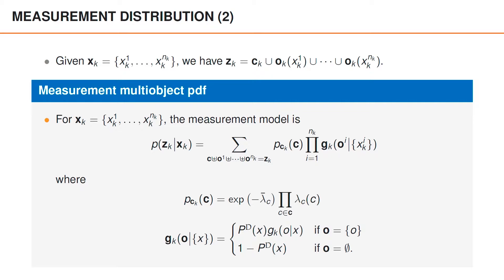Inside this expression, pck denotes the clutter distribution, which is a Poisson point process PDF, and gk denotes the distribution of the measurements from a single object, which is a multi-Bernoulli PDF. To make sense of this summation, think of every term as an association hypothesis: in every term we say I think these measurements are clutter, these measurements are the object measurements from object 1, and so on, until every measurement in zk is assigned to one of the sets. We then sum over all such association hypotheses.